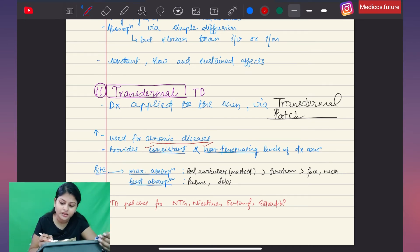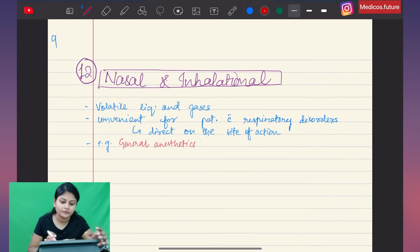This transdermal route provides constant, consistent, and non-fluctuating levels of drug concentration. The site of maximum absorption is post-auricular and scrotal region, then face and neck. The least absorption site is palms and soles. Examples include nicotine patch for smokers, nitrate patch, fentanyl patches, and estradiol patches.